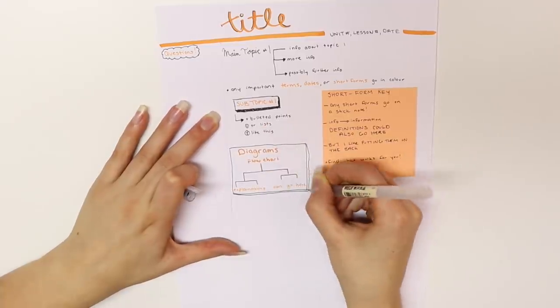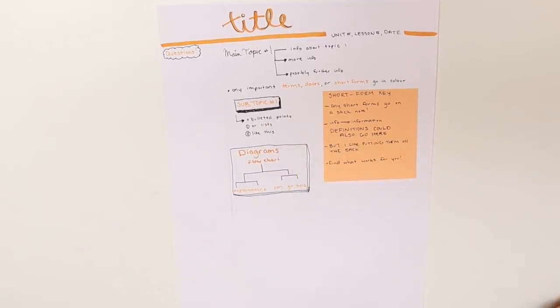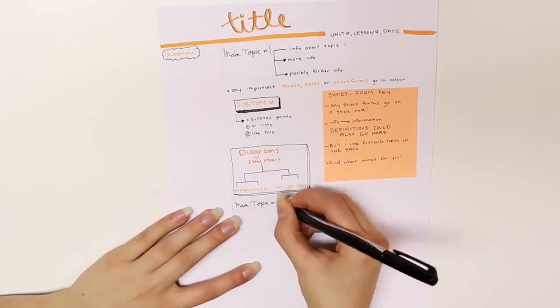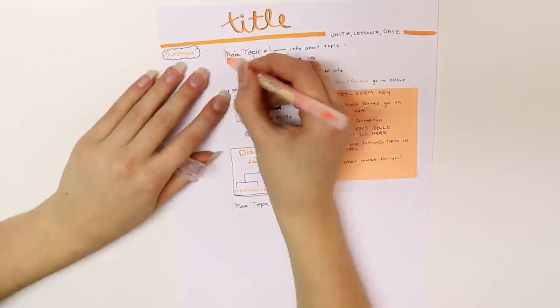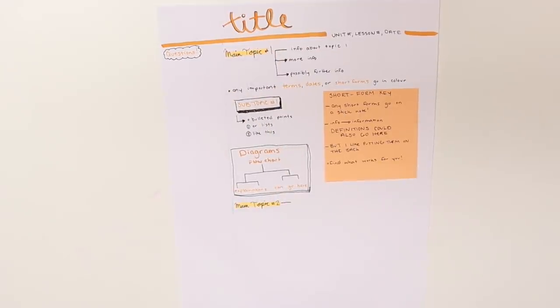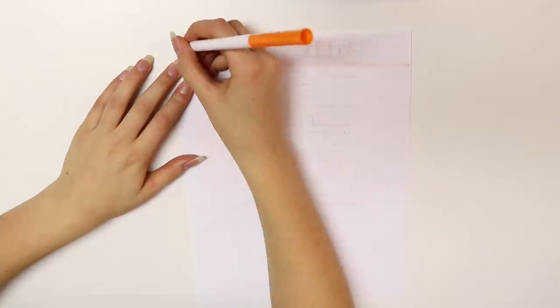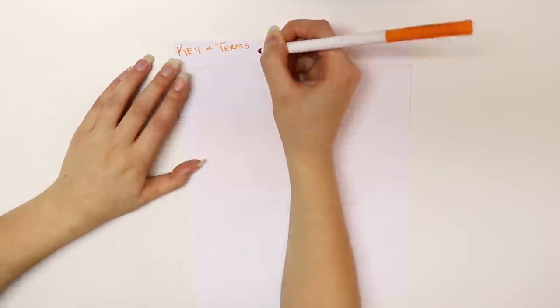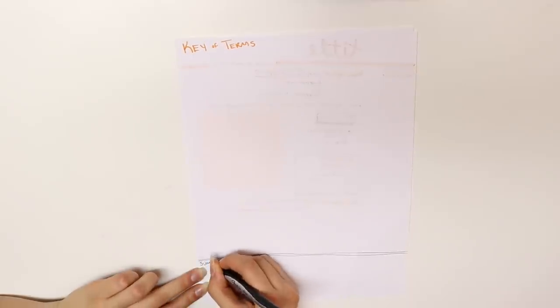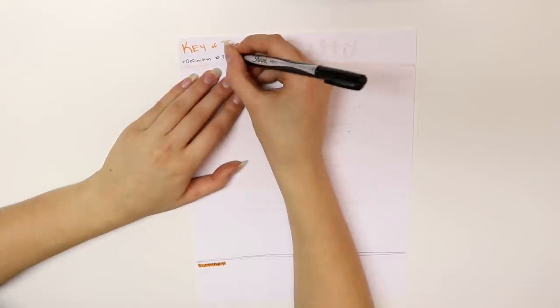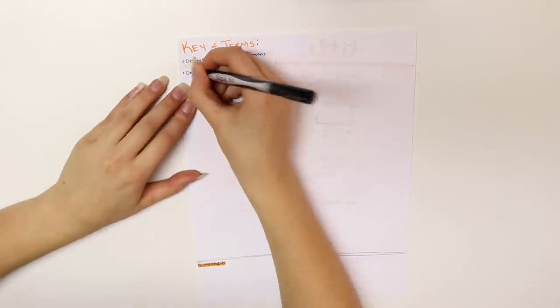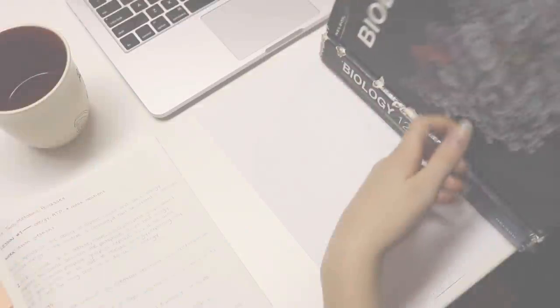I'm finding diagrams are really helpful to kind of show an explanation of what's going on in what you're trying to explain in the note. If you have any other main topics, just follow what you did for the first main topic. If you flip onto the back side, what I do is create a key of terms and definitions, and at the bottom I will box off a section to do a summary and kind of summarize what the lesson was in my own words. I find this really helpful for anything that's a super long lesson or something that might be confusing.